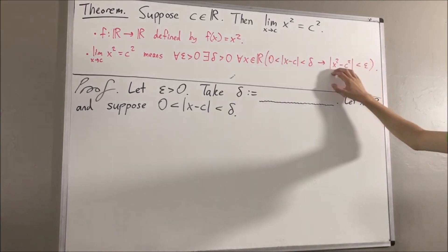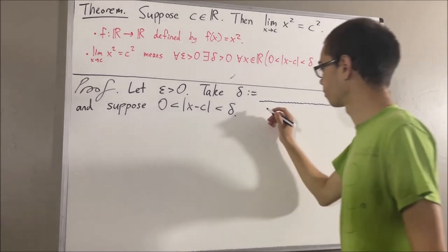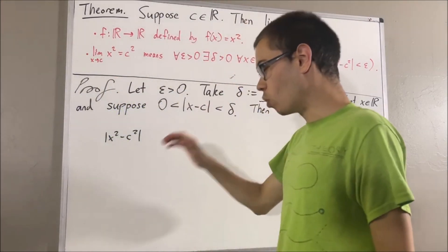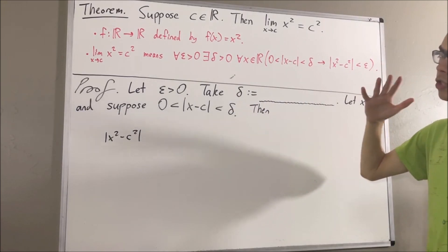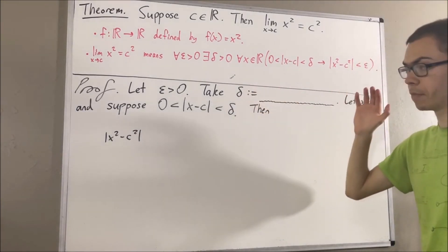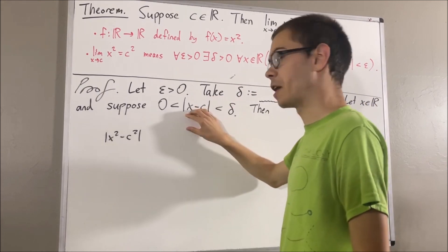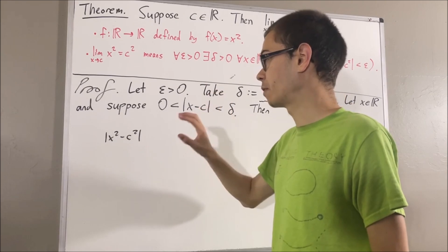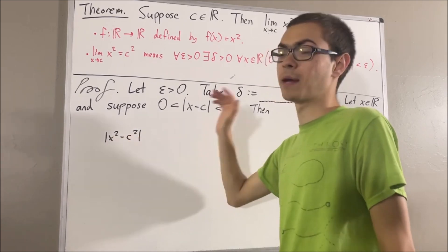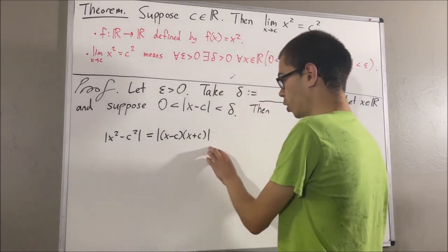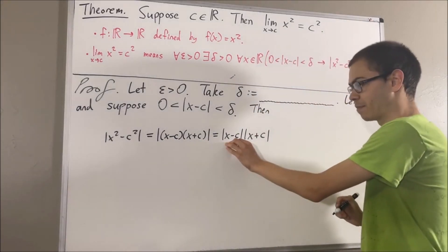From here, we want to show that the absolute value of x squared minus c squared is less than epsilon. Let me start out by writing the left-hand side of this inequality. We want to make this less than epsilon. Since we're working under an assumption about absolute value of x minus c, it might be nice if we bring absolute value of x minus c into our work. We know that x squared minus c squared equals x minus c times x plus c, and the absolute value of this equals absolute value of x minus c times absolute value of x plus c. So we have brought absolute value of x minus c into our work.